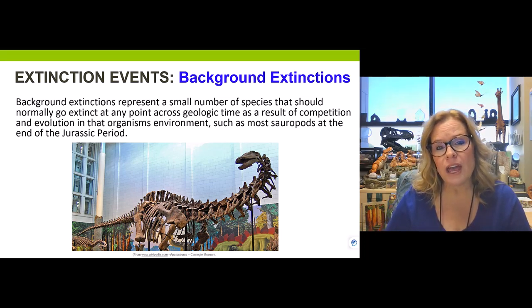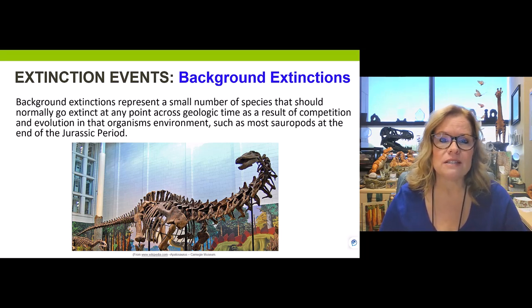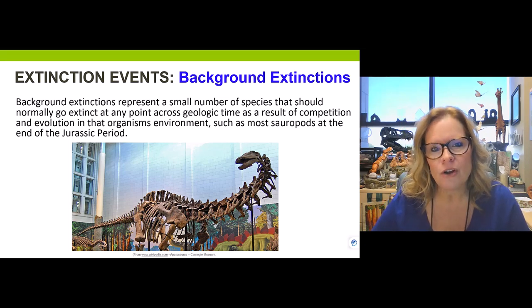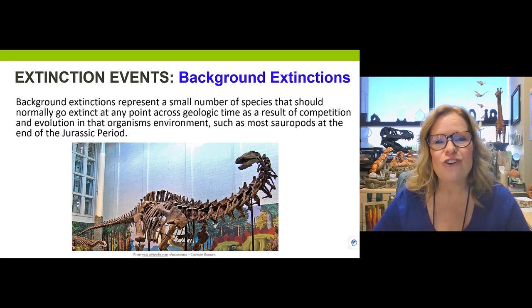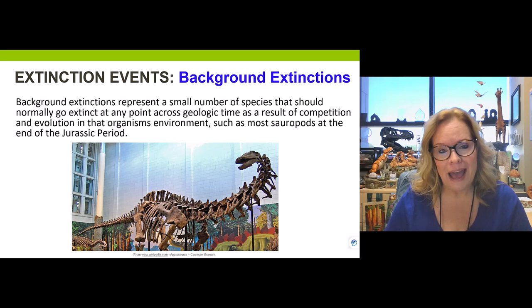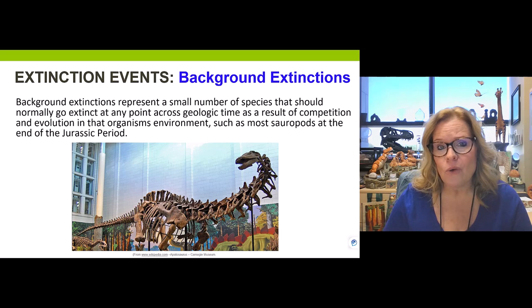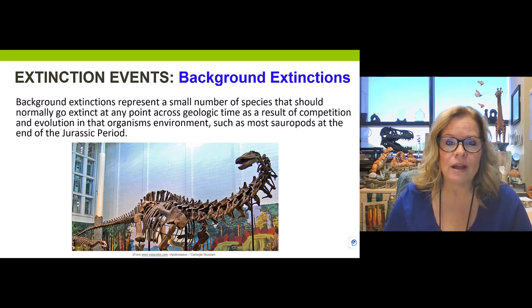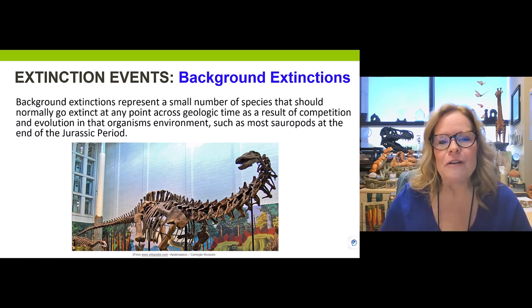When a species is no longer able to reproduce, they're going to fizzle out when the last one goes extinct. Humans have put a finger on background extinctions through captive breeding programs and other means to try to prevent organisms from going extinct, though that is only as successful as the breeding program allows. In nature, there are no captive breeding programs, which is why many organisms can go extinct naturally.